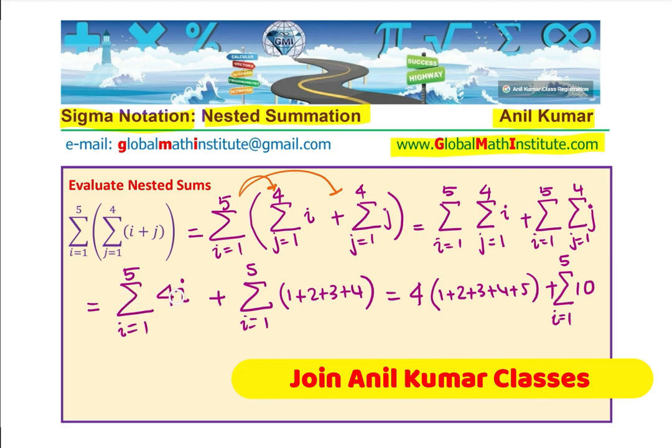So this was 4 times i changes from 1 to 5, the sum of these numbers, 5 of these. That gives us 4 times sum of first 5 numbers, which is 5 times 6 divided by 2, plus 10 times 5. Because this is going to get added 5 times, so 50.